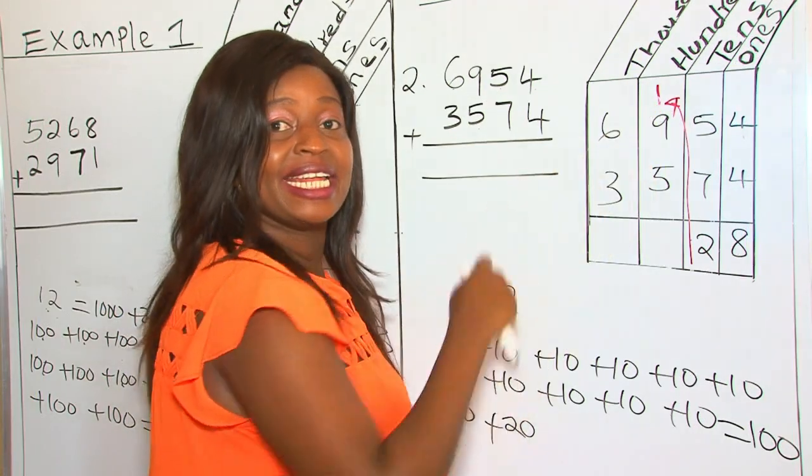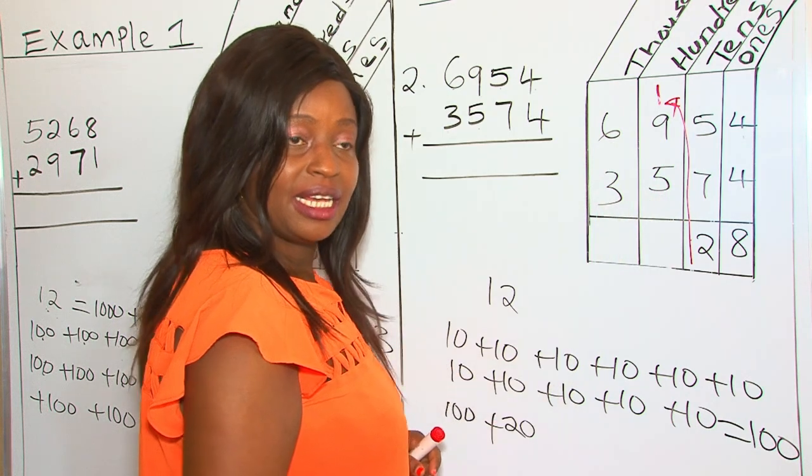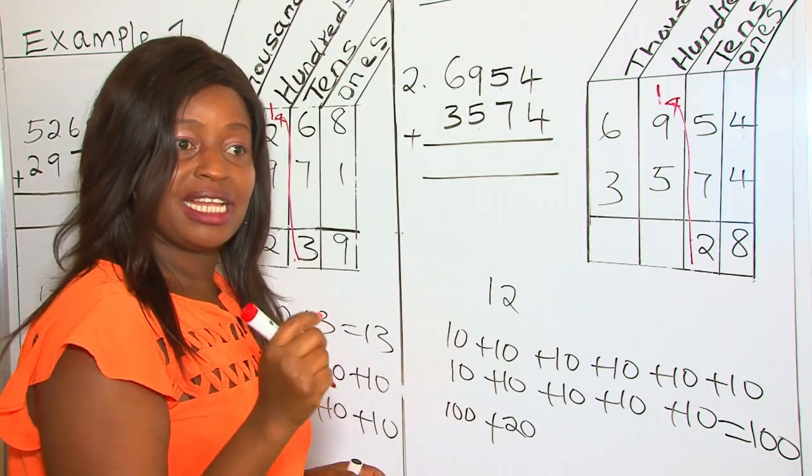So 1 plus 9 is 10, 10 plus 5 is 15. And what is this 15? These are 1500s.